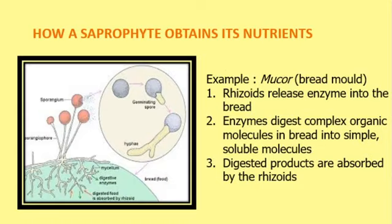For example, if you leave a piece of bread inside a container and check it after a few weeks, you'll see bread mold — that's called Mucor. What happens is: the rhizoids release enzymes onto the bread, and those enzymes digest complex organic molecules into simpler soluble ones. Since bread is a carbohydrate, it gets broken down into disaccharides and then monosaccharides — simple sugars.